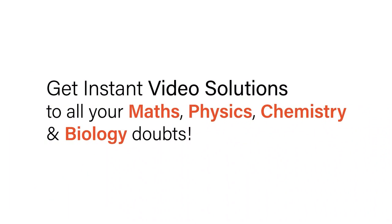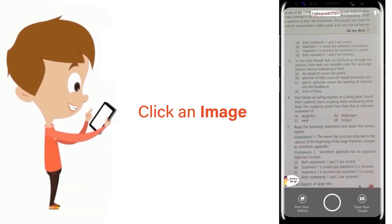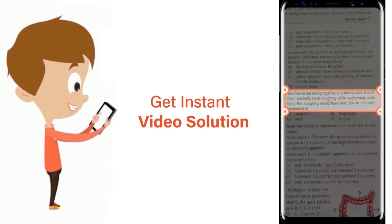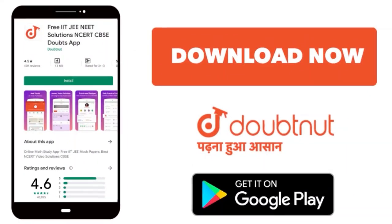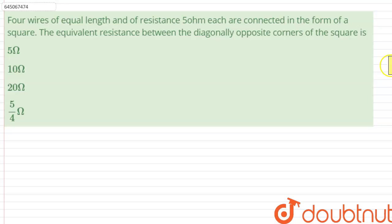With Doubtnet, get instant video solutions to all your math, physics, chemistry, and biology doubts. Just click the image of the question, crop the question, and get instant video solutions. Download Doubtnet app today. Hello everyone, four wires of equal length and resistance 5 ohm each...